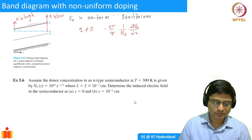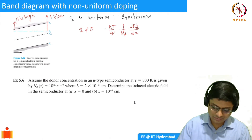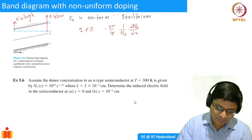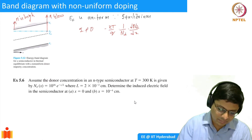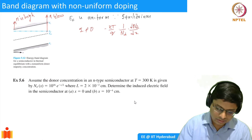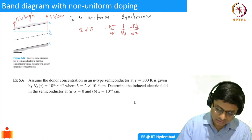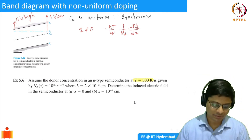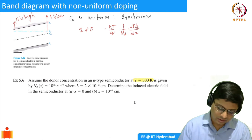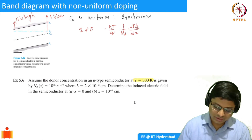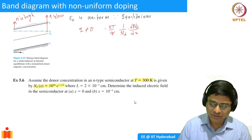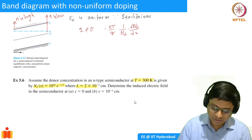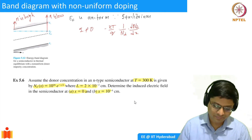Let's take a specific example: an N-type semiconductor at temperature T equals 300 K. Remember, diffusion coefficients and mobility all depend on temperature. N_D is given as some exponential function, the length of the semiconductor is given, and you are asked to calculate the induced electric field at x equals 0 and x equals 10⁻⁴ cm.